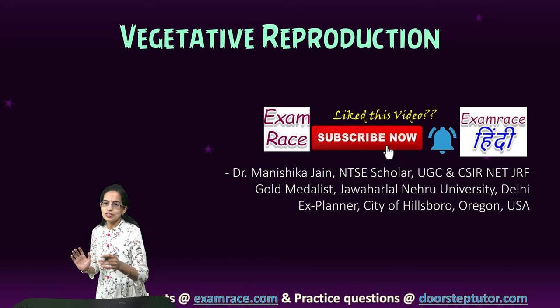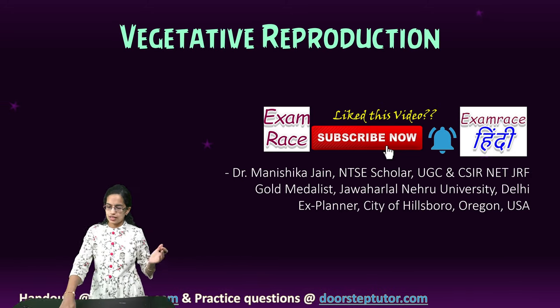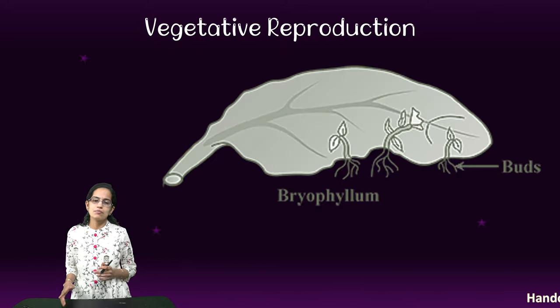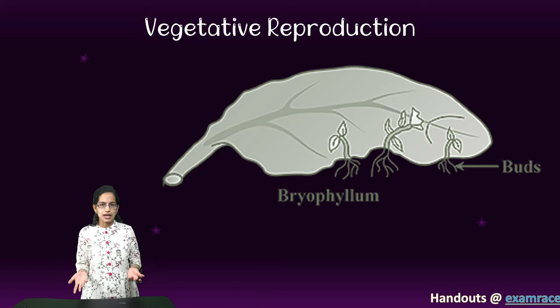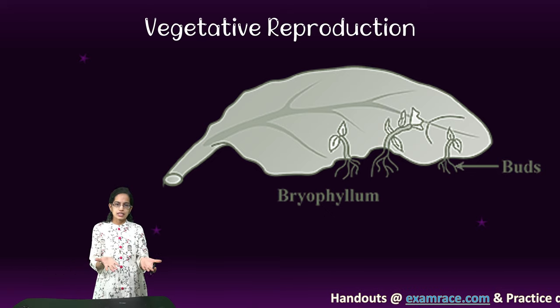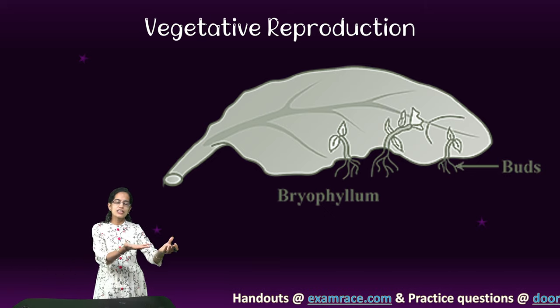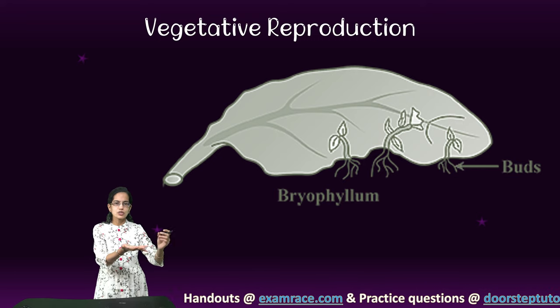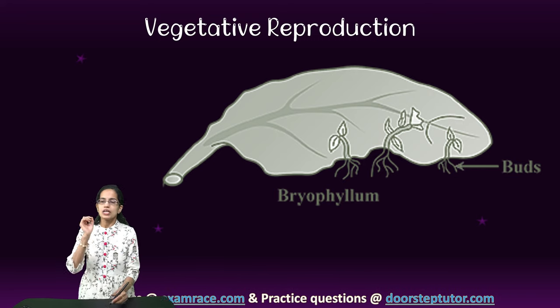Let's understand the concept of vegetative reproduction. A very common example that we would understand today is Bryophyllum. Bryophyllum is a leaf where you have new plants originating from the leaf itself.